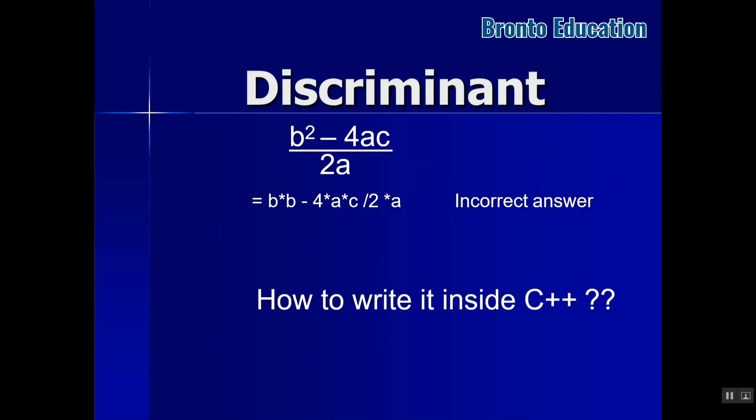Let's get to the discriminant. Here we have b square minus 4ac, the whole divided by 2a. Is it a correct answer? Of course not. We have to show which one has the most precedence, which one should be solved first. Here first will be b multiplied by b, then 4 multiplied by a, then the result will be multiplied by c, then it will be divided by 2, then it will be multiplied by a. That's wrong.